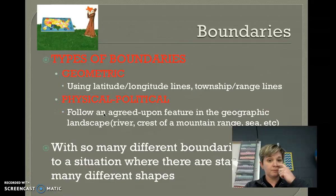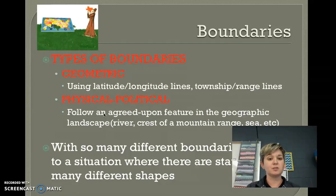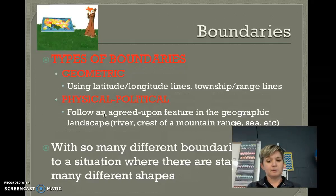There are a couple of types of boundaries. Geometric boundaries are always straight lines using latitude/longitude lines or township and range lines. Physical political boundaries follow some physical feature of the land like a river — you can always tell a physical political boundary because it will be curvy.